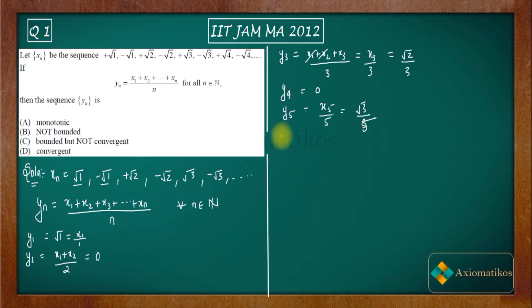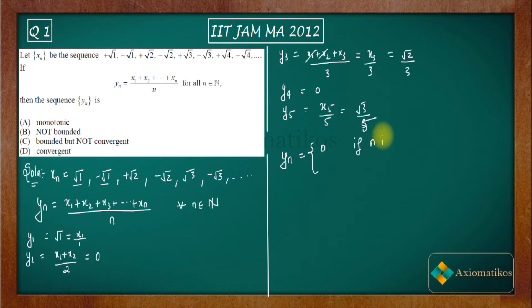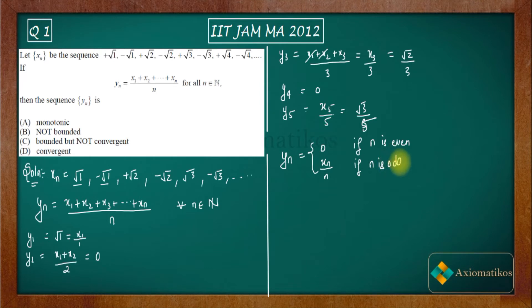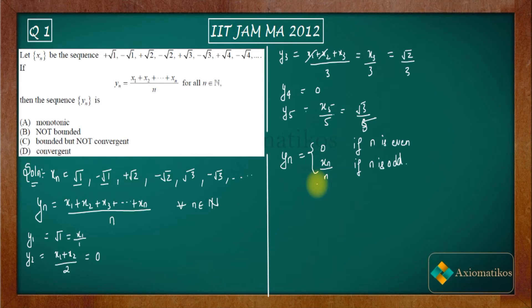We can now generalize: yn = 0 if n is even, and yn = xn/n if n is odd. This generalization will be very helpful for determining convergence.